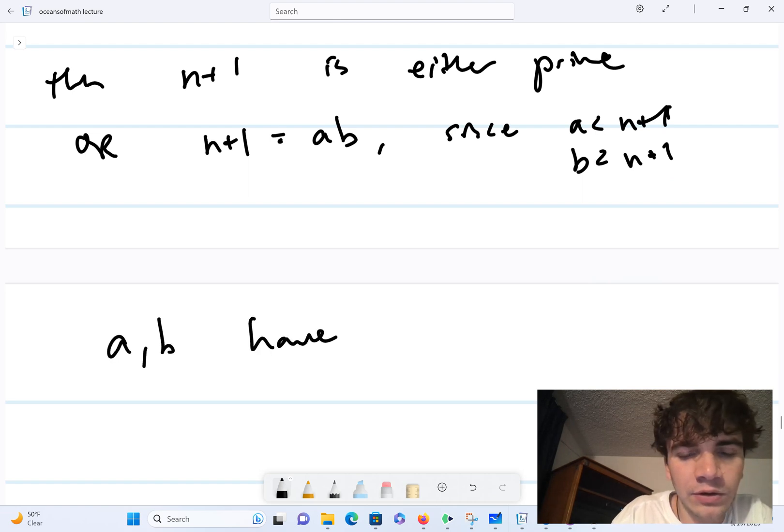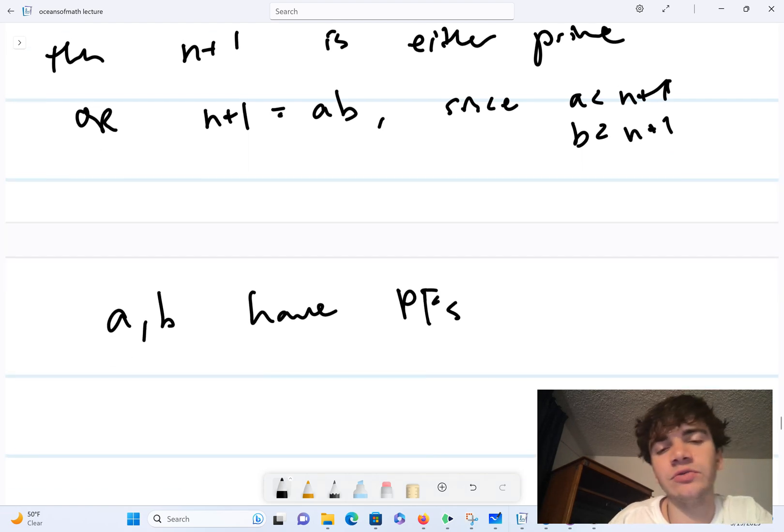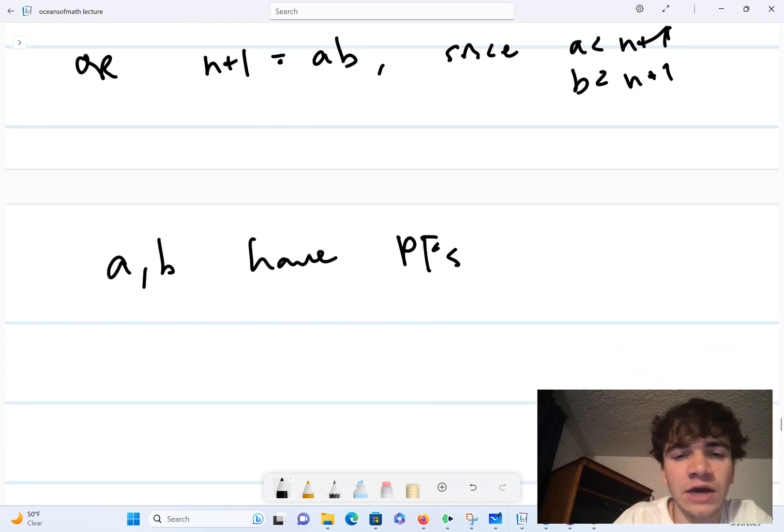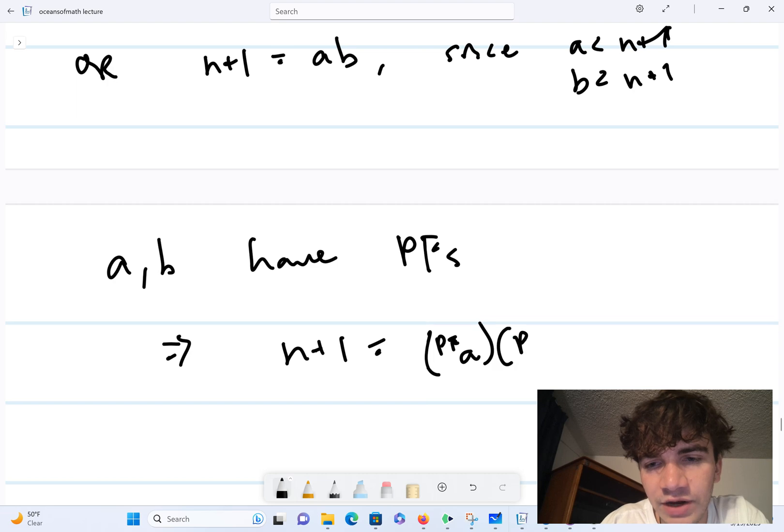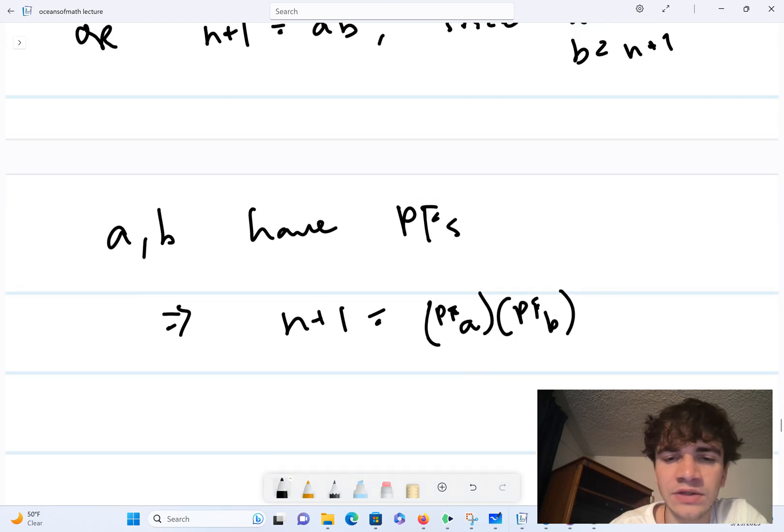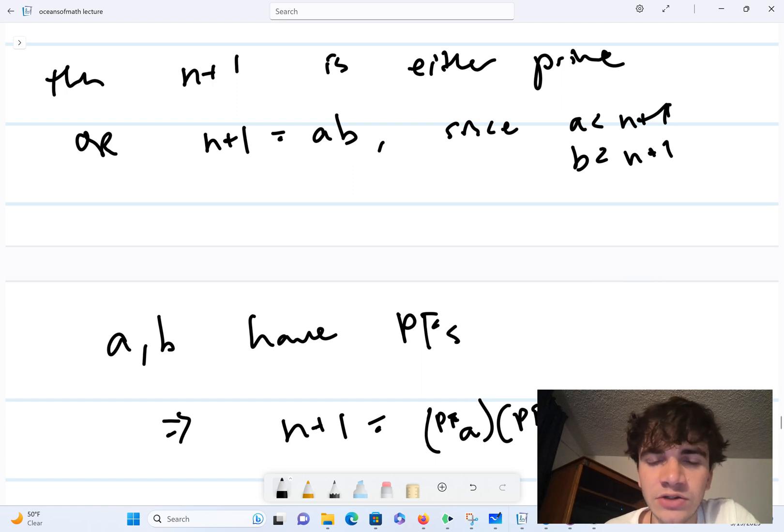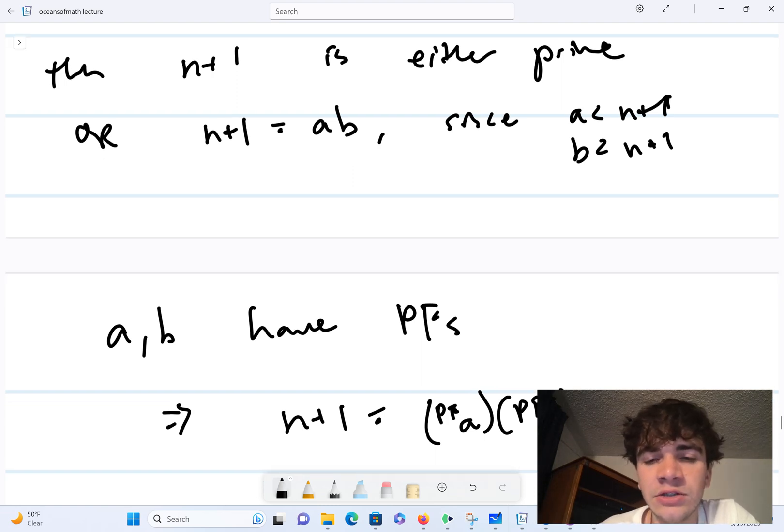We conclude that a and b have prime factorizations by our assumption. We assumed that everything from one to n had a prime factorization—namely we've already assumed that a and b have prime factorizations. And therefore n plus one is simply equal to the product of the prime factorization of a times the prime factorization of b.